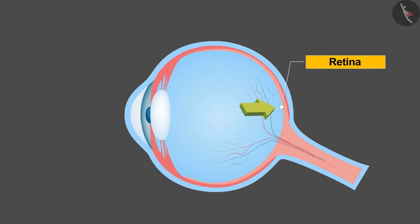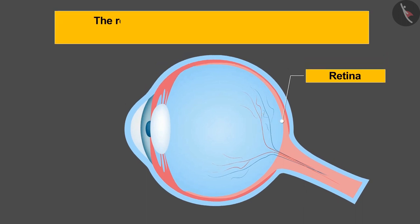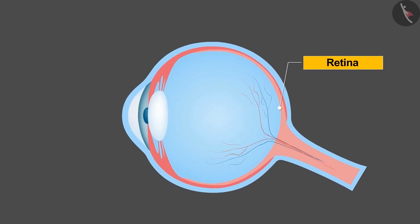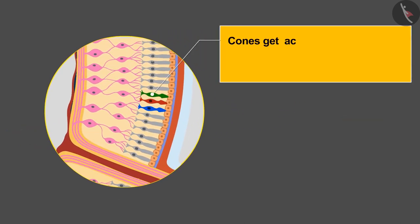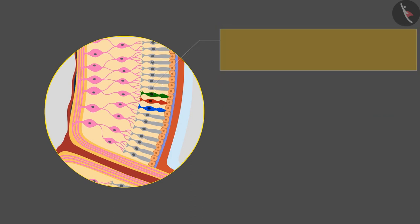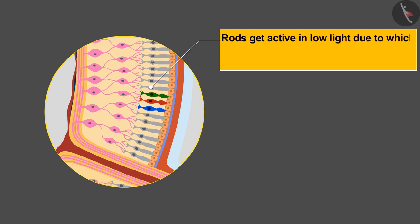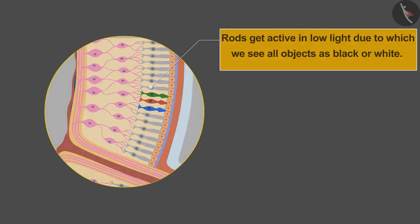This surface of the eye is called the retina. The retina works like a film in the eyes on which images of the objects are formed. Retina has two special types of cells: cones and rods, which become active when light falls on them. Cones get activated by light, due to which we are able to see different colors. Rods get active in low light, due to which we see all objects in black or white.